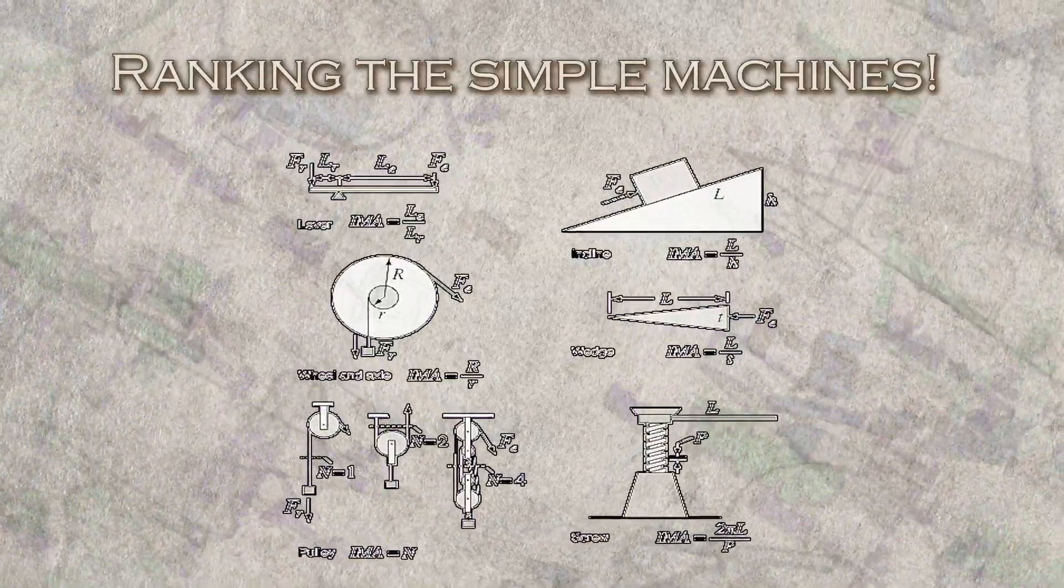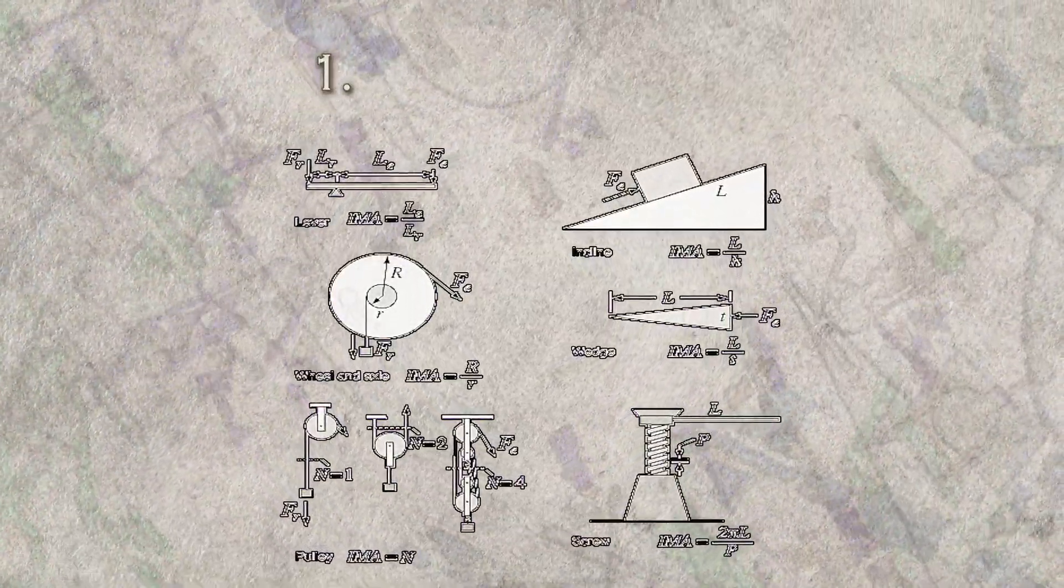This is a ranking of the simple machines from 1 to 6. Number 1, the wheel and axle.